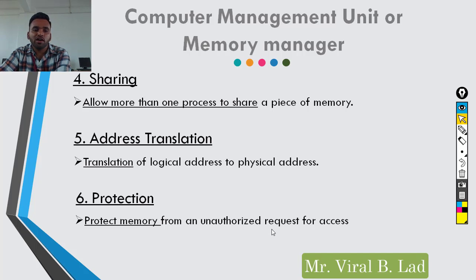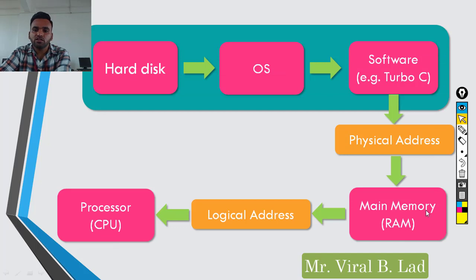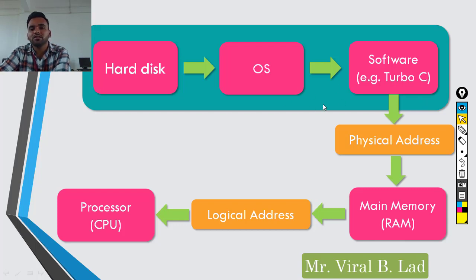The last operation is protection. Protection means to protect memory from unauthorized requests for access. If there is an unauthorized process in the system, the protection operation prevents it from accessing memory. So these are the six operations of the memory manager: fetch, placement, replacement, sharing, address translation, and protection — all used to manage main memory.